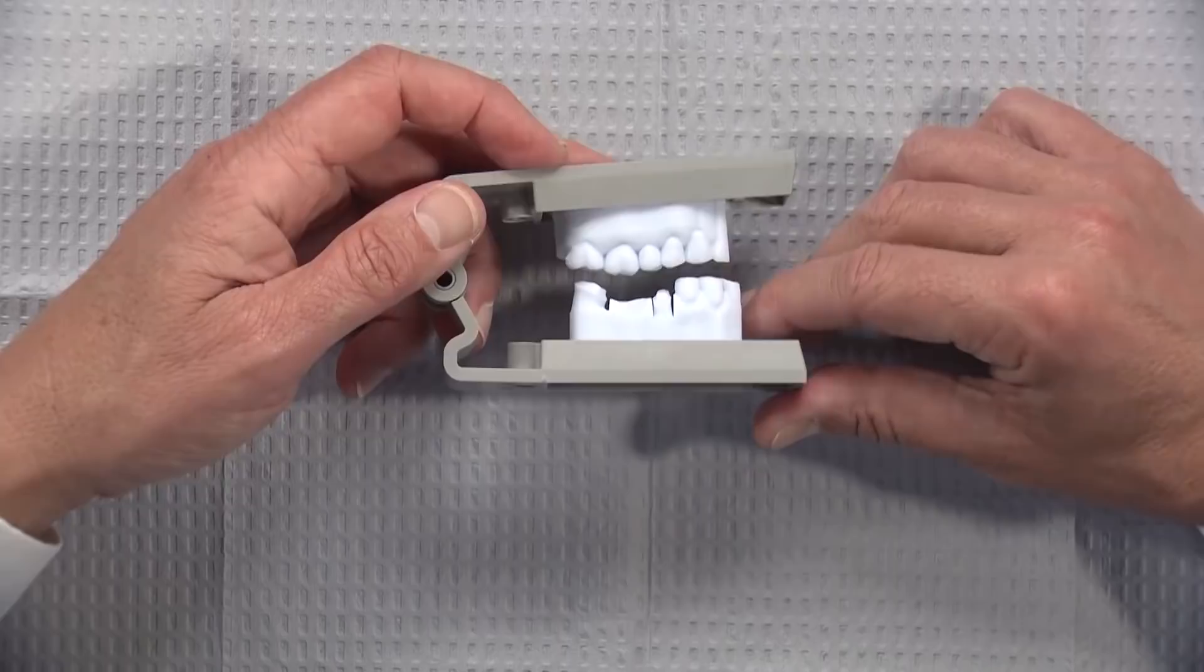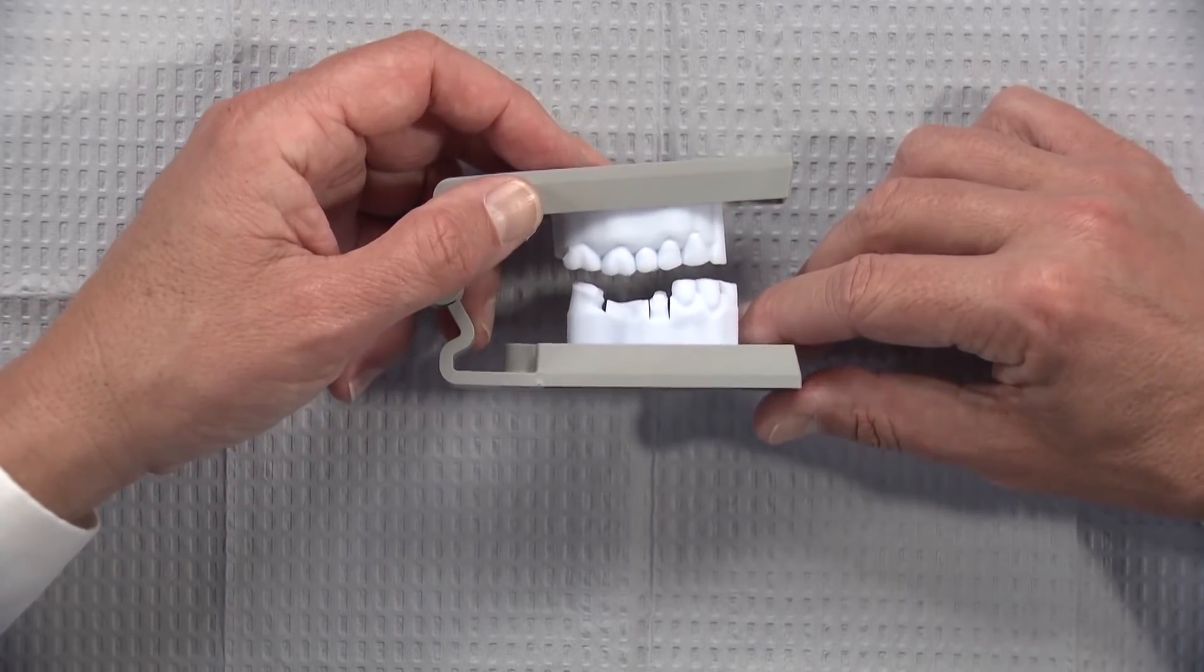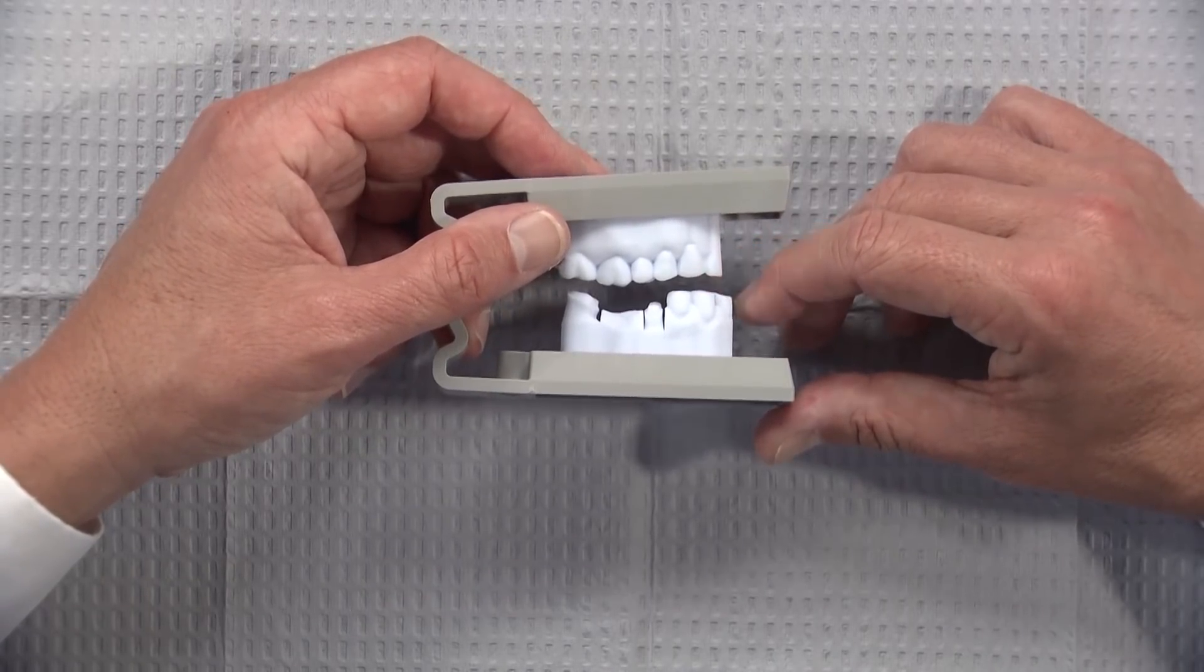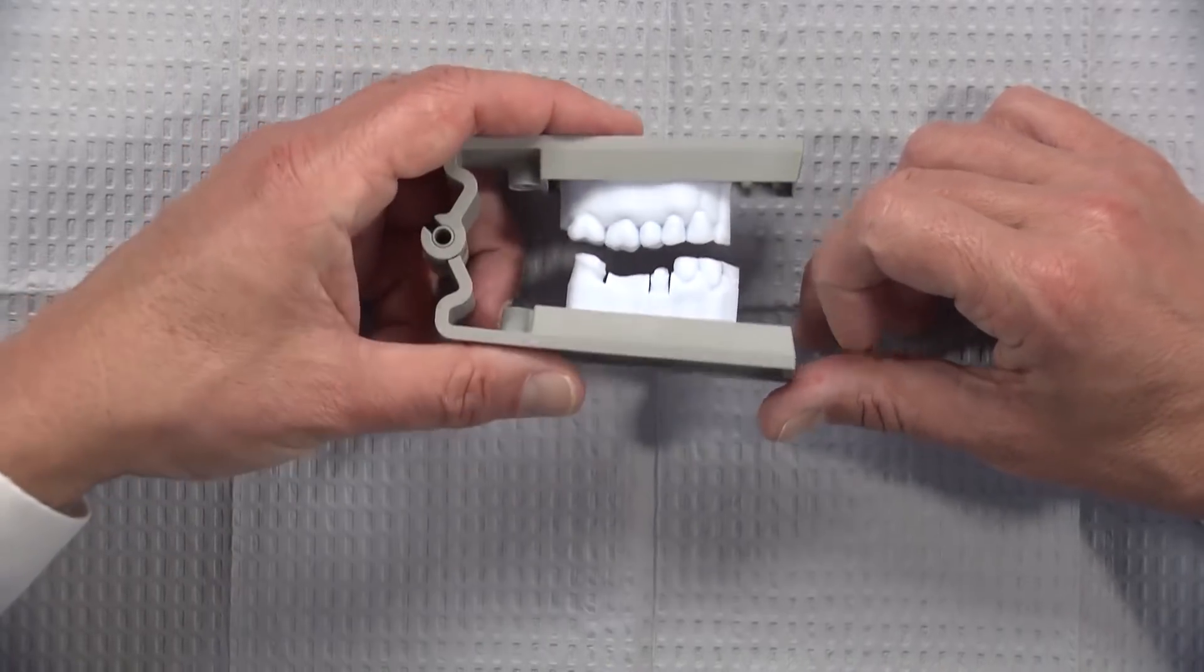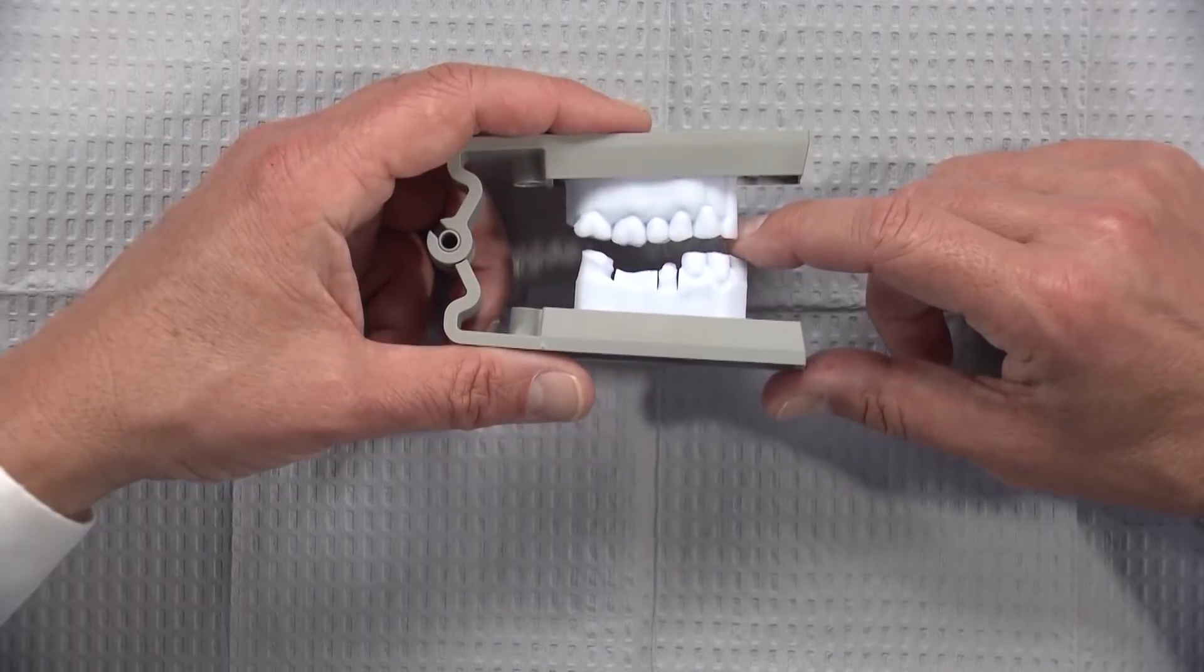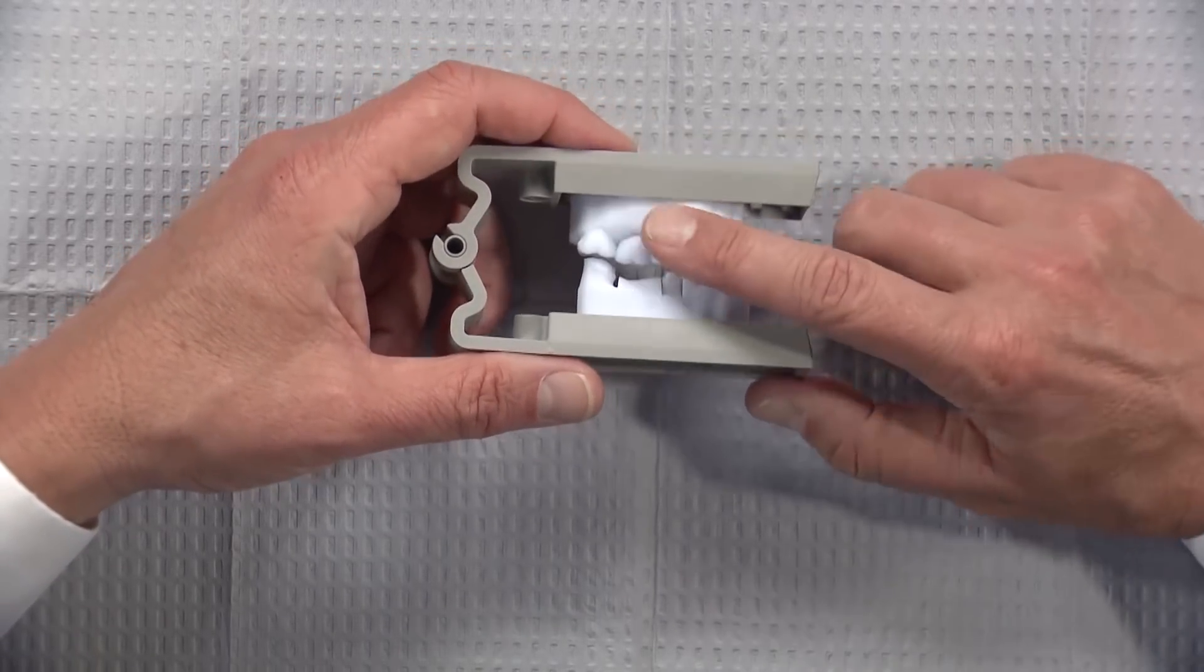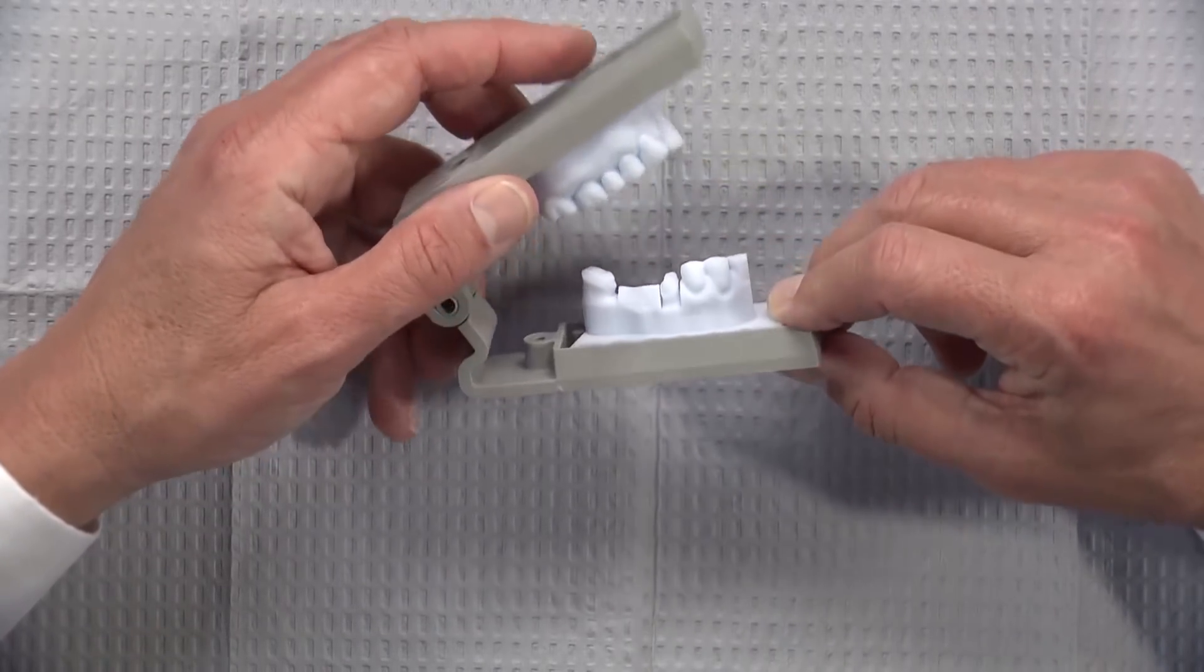If you use our Clear Lock product where we will send you essentially orthodontic retainers or Essix retainers, we'll send you three upper and three lower. If the patient loses them or the dog eats them and you need three more, this is what we do. We take that stored digital impression that you made or that we made from a stone model and then we'll print models like this.